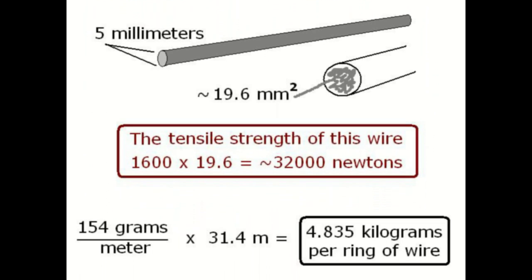Let's construct a ring. High tensile strength steel wire for pre-stressing concrete is about 5 millimeters in diameter and is 19.6 square millimeters in cross section. It has a mass of about 154 grams per meter and will break at around 1600 newtons per square millimeter. 1600 times 19.6 equals 32,000 newtons and this is the tensile strength of this wire. 154 grams per meter times the 31.4 meter circumference of the ring gives us a total mass of 4.835 kilograms.